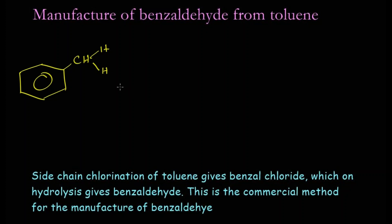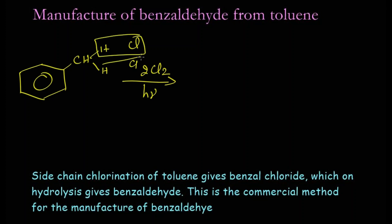We are going to chlorinate it — two molecules of chlorine (2 Cl₂) will get attached in the presence of light (hν). Two chlorines and two hydrogens will get eliminated as 2 HCl, and the two remaining chlorines get attached to this carbon.